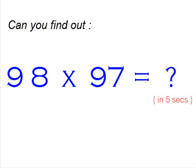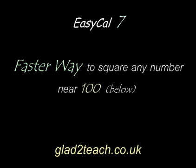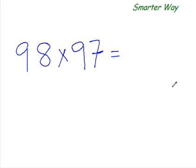And then you'll be able to multiply any numbers that are closer to base 100 in less than five seconds. The smarter way of multiplying 98 times 97 would be, watch me.